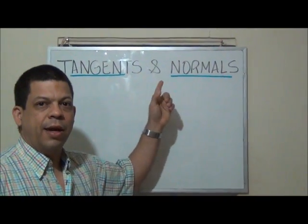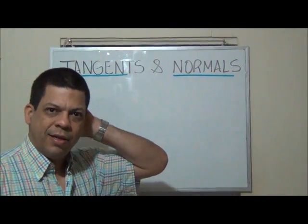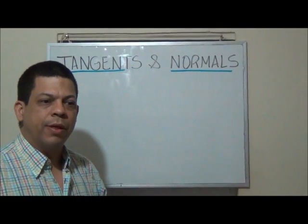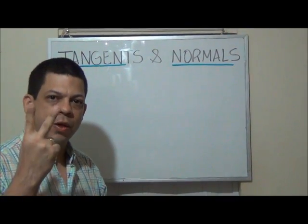Now that we know what a tangent and a normal line is, we have to remember that to define any straight line we need two things.